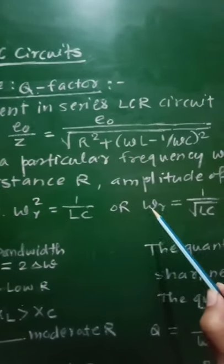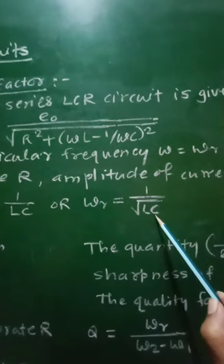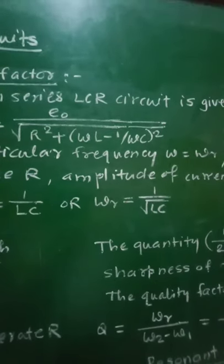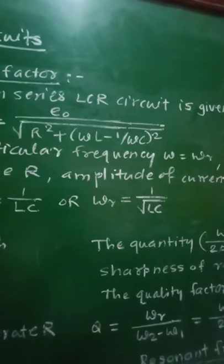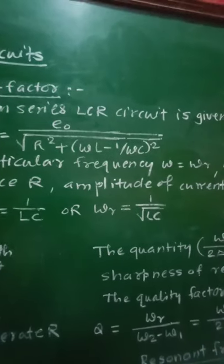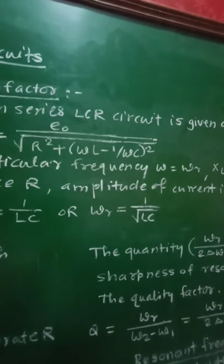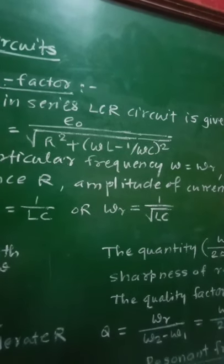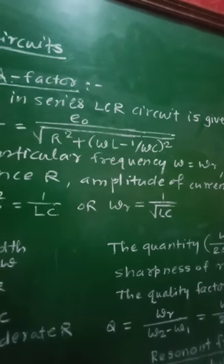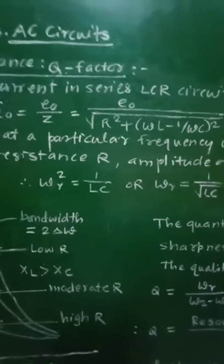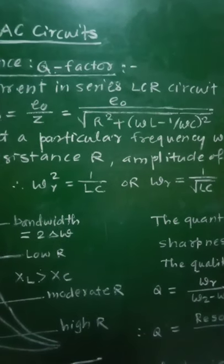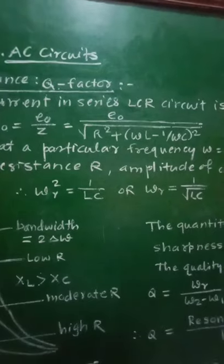When this difference is zero the amplitude of current is maximum, and therefore we can write ωᵣ² = 1/(LC), or ωᵣ = 1/√(LC). This equation gives us the angular resonant frequency ωᵣ. For values of omega other than ωᵣ, the amplitude of current is always less than the maximum value I₀.